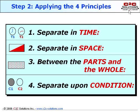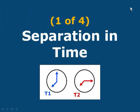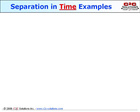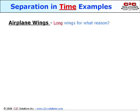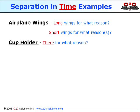These four separation principles are: separation in time, space, between the parts and the whole, and upon condition. Let's first look at separation in time. To illustrate separation in time, let's consider a few physical contradictions. Airplane wings, for example — you want them long for lift, but short for drag. A cup holder: you want it there because you have a cup. You don't want it there because most of the time you don't have a cup.